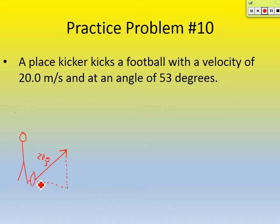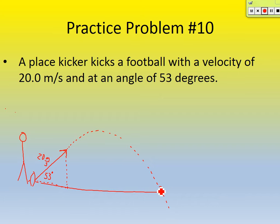Theta is 53 degrees — he kicked it at an angle of 53 degrees. We know that football is going to be kicked and then follow a parabola-like trajectory until it hits the ground again somewhere over here. Before we start, let's begin by breaking its initial velocity into its component parts. I'm going to call this one VOx — velocity initial in the x — and I'm going to call this side of the triangle VOy, the initial velocity in the y direction. Now let's use some trigonometry to solve for what they are.